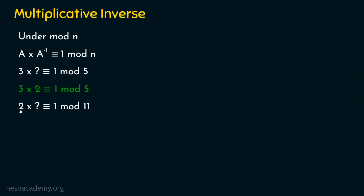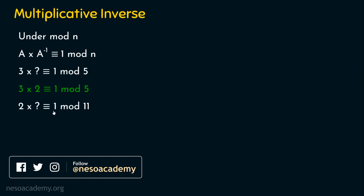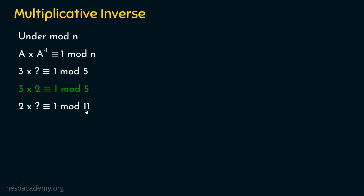Now let's find the multiplicative inverse of 2 mod 11. We need a number such that 2 times that number, divided by 11, gives remainder 1. Trying 1 through 5 yields remainders 2, 4, 6, 8, and 10 respectively — none equal 1. Trying 6: 2 times 6 is 12, and 12 divided by 11 gives remainder 1. So the multiplicative inverse of 2 mod 11 is 6.